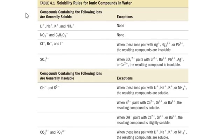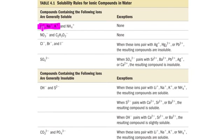Here is a solubility table you need to learn how to work with. It says compounds containing the following ions are generally soluble. Please understand — we are studying chemistry, so we do have exceptions. In general, group number 1 elements like lithium, sodium, potassium, or hydrogen are soluble. Ammonium, as a polyatomic cation, acts like a group 1 element because it has one positive charge, so ammonium always makes soluble compounds. Nitrate and acetate also make soluble compounds.